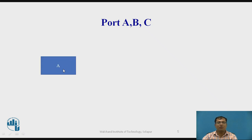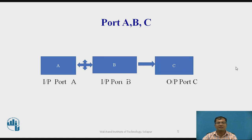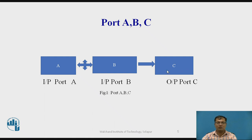Port A content will be read, and similarly content from Port B will be read. The content of Port A and Port B are added and the result is sent to Port C. Port A and B are input ports; hence in the control word format, the respective bits are made 1. Port C, acting as an output port, has its bits set to 0.